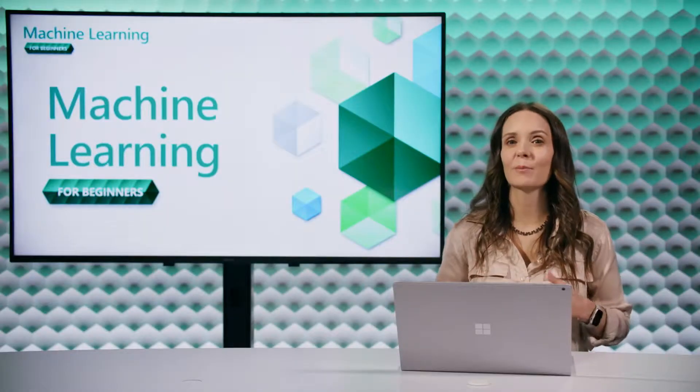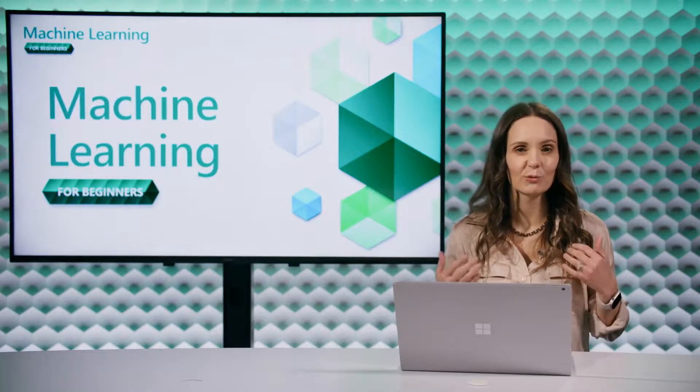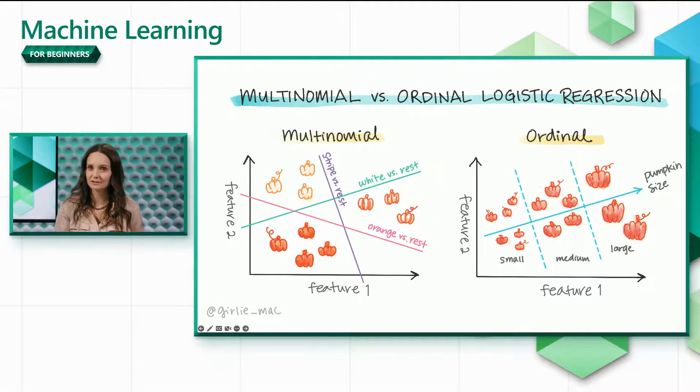So far we talked about binary logistic regression where your prediction can be classified in one of two ways. But there are other types of logistic regression such as multinomial and ordinal. You can use multinomial logistic regression when your prediction has more than two classes, for example you might want to predict if the pumpkins are orange, white, or striped.